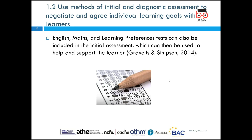Within this we also use English, maths, and learning preference tests as part of initial assessments to help and support learners. The reason we do these is to get a basic background. For younger students, not every six or seven-year-old can spell the same or has the same understanding as each other. Some are born at the beginning of the year — September, October, November — so they're more mature than those born at the end, say June or July.